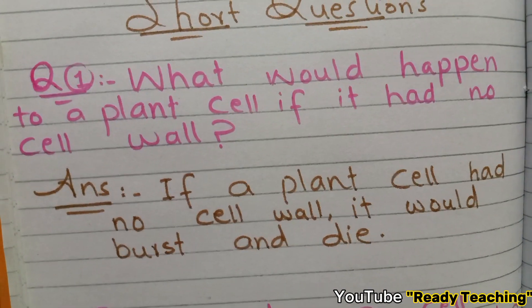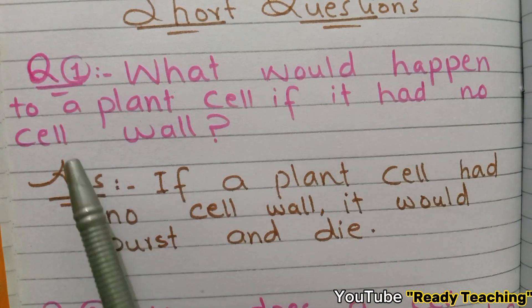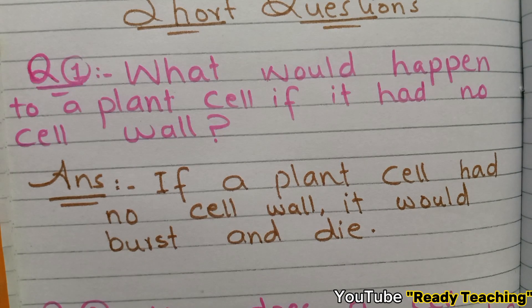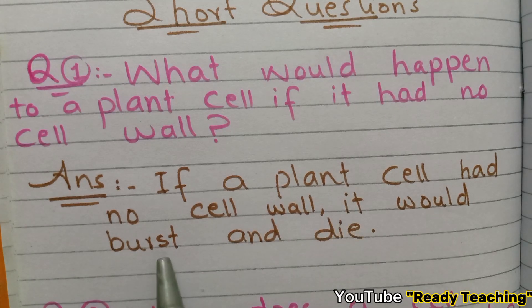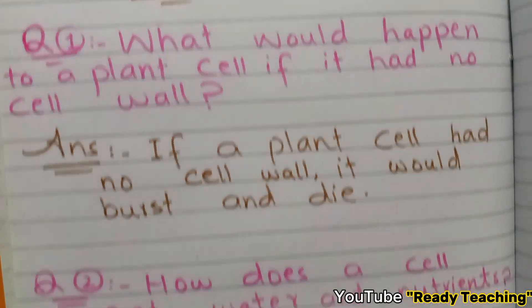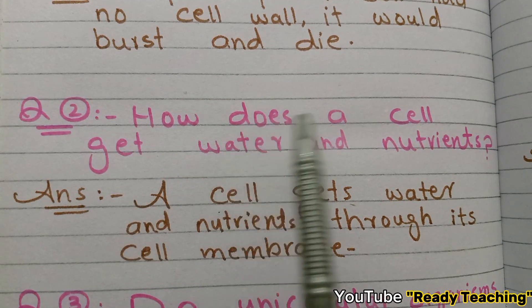Now moving to short questions. First short question: What would happen to a plant cell if it had no cell wall? If a plant cell had no cell wall, it would burst. The cell wall holds materials inside; without it, excess water would enter from the environment and the cell would burst and die, unable to perform its functions.